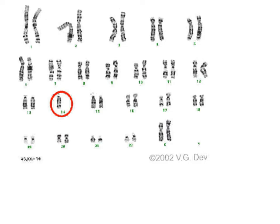This karyotype is missing a chromosome at number 14. So our notation would be 45, because one is missing. My sex chromosomes are the same — XX. And then I would write minus 14 to let you know which one is missing.